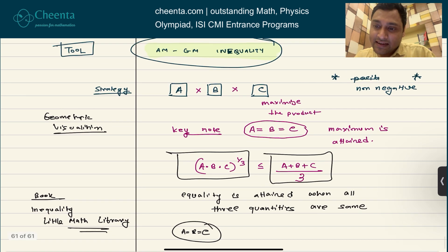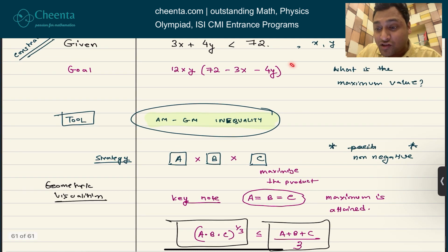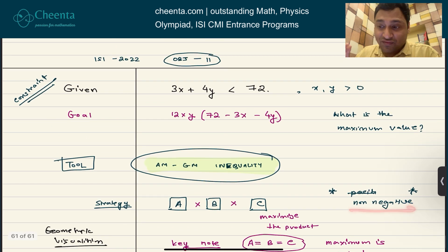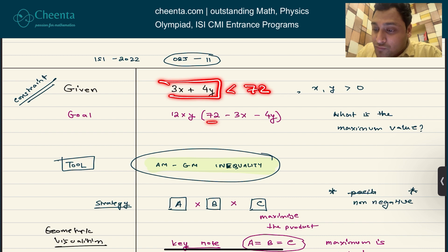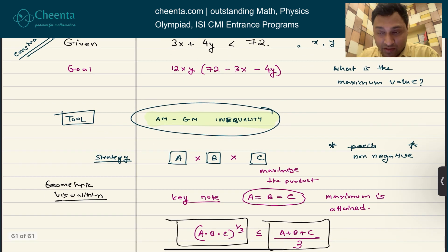Now, coming back to it, what it says essentially is this: if you would like to maximize this quantity, first make sure that everything is non-negative. So that's fine, X and Y are non-negative, that's given. And since 3X plus 4Y is less than 72, therefore 72 minus 3X minus 4Y is also positive. So all the numbers here are positive numbers, so we can use the AM-GM inequality.